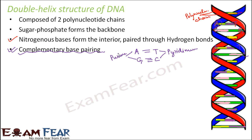A and T act as complements of each other; similarly G and C act as complements of each other. Due to this complementary base pairing, the process of replication of DNA — that is, creating a copy of DNA — is made very easy. Copy creation is easy because of complementary base pairing.